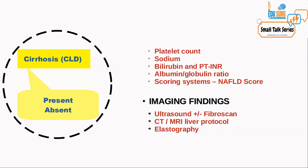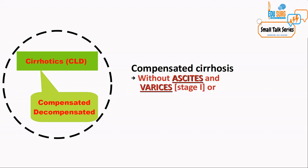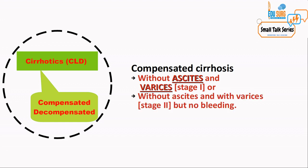Once you know your patient has chronic liver disease, the key point is to determine whether it is compensated or decompensated. We have a staging system: stage 1 is compensated CLD where the patient has no ascites and no varices. Stage 2 is compensated CLD where there are non-bleeding varices. To remember — ascites is fluid and varices is blood. If both are absent, it is stage 1. If there are varices but they are not bleeding, it is stage 2. Both stages 1 and 2 are compensated chronic liver disease.